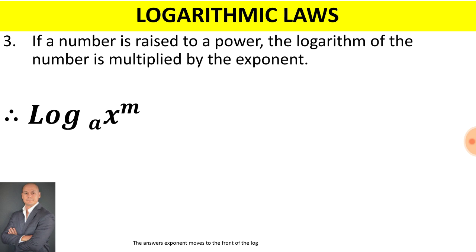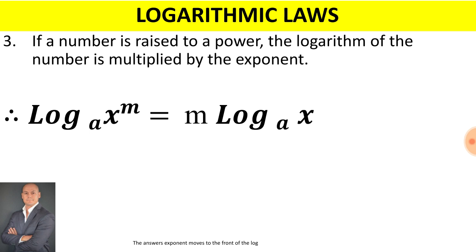If a number is raised to a power, the logarithm of the number is multiplied by the exponent. Therefore, log base a of x to the exponent of m can be rewritten by taking the m to the front of the log — it will be m multiplied by log base a of x.